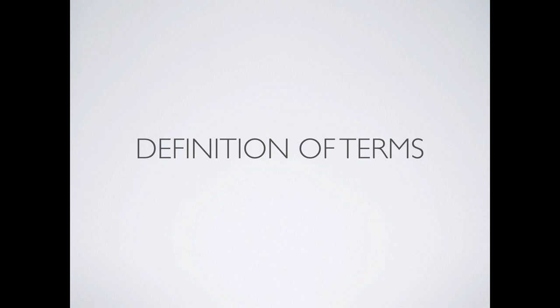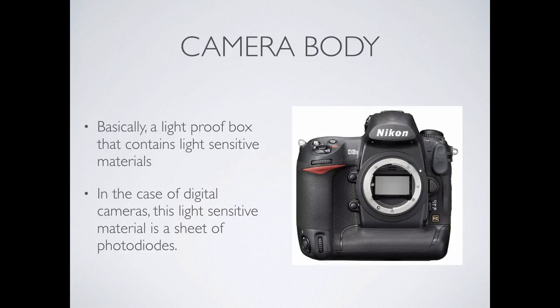We'll start with the definition of terms, so that when I talk about something like aperture, you have an idea of what I'm talking about as we go forward. First off, we have what's called the camera body. The camera body is essentially a light-proof box that holds some kind of photosensitive media. In the old days, when you had a camera with film, you had a light-proof box, you put a piece of film inside, you exposed light onto the film, and then you developed the film later on. With digital cameras, it's essentially the same thing — the only difference is instead of film, there's a sensor that reads the light. Which is really nice because you can screw up as many times as you want and just delete the pictures.